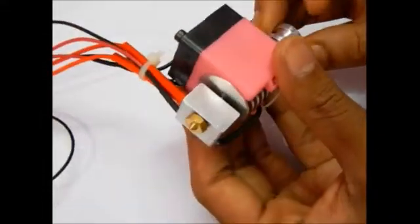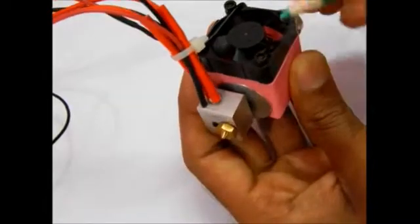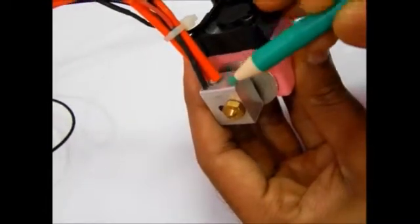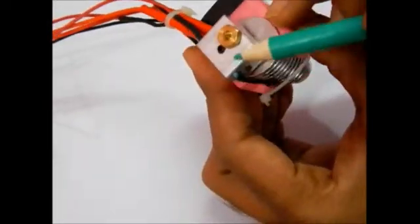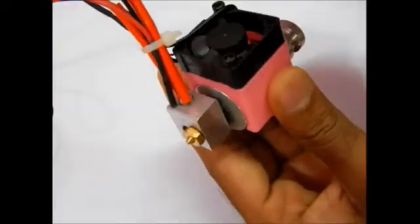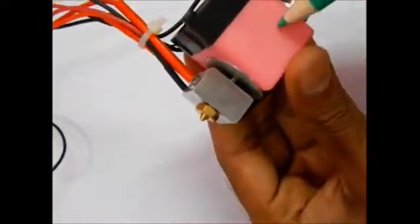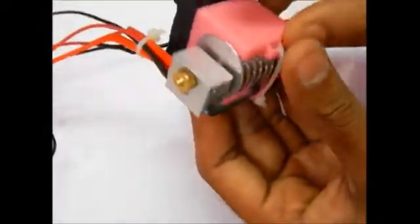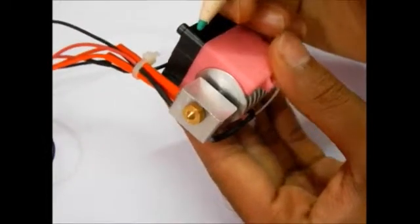3D Print Onyx will dispatch a completely assembled hotend like this one. We will fix the heater cartridge into the heater block, thermistor into the heater block, and the fan will be mounted on the fan shroud around the aluminum heat sink.